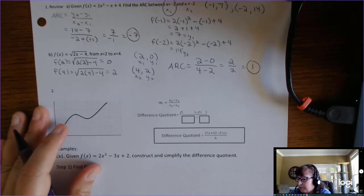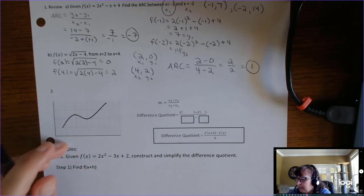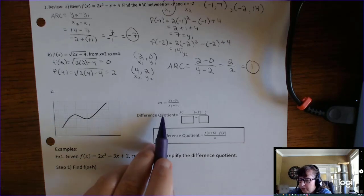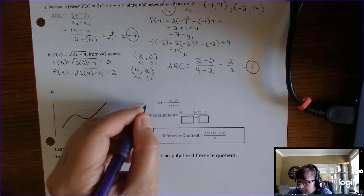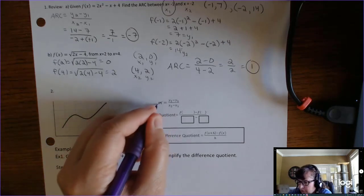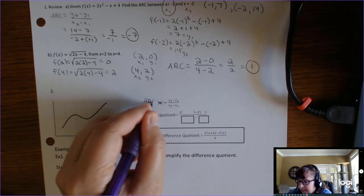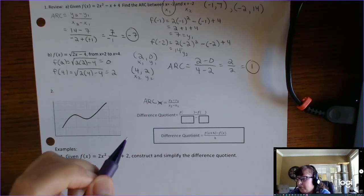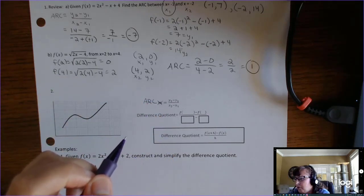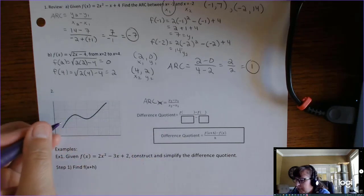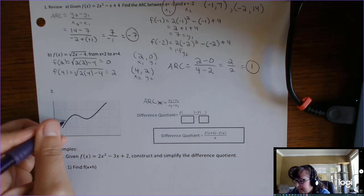That's our review. The reason we're reviewing is because now we're going to take this ARC formula, or slope formula, and rewrite it with function notation. We're also going to change the way we talk about x2.